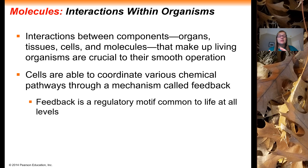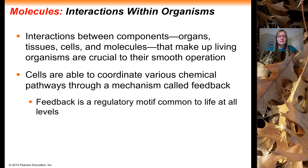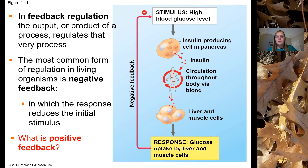One of the ways in which cells regulate how various chemical pathways function is through a mechanism called feedback. We're going to talk about feedback as a regulatory motif in multiple stages throughout the semester — it's common to life at all levels, not just at the small molecular level, but also at the ecosystem level. In feedback regulation, the output or product of a process goes back and regulates the beginning of that same process that created it.